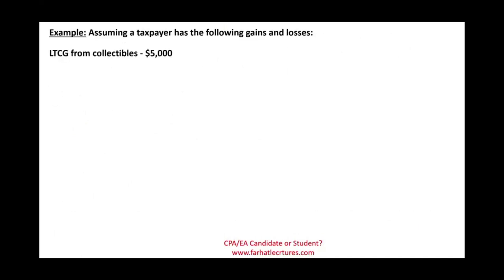The first example: assume a taxpayer has the following gains and losses. Long-term capital gain from collectibles of $5,000 and long-term capital loss from collectibles of $2,000. Both of these are collectibles, so you net that category by itself. The result is a net long-term capital gain of $3,000, which is subject to the 28% rate because it's a collectible.